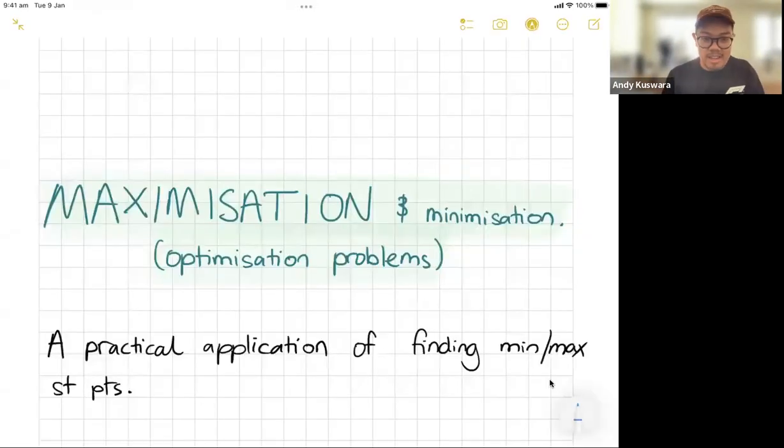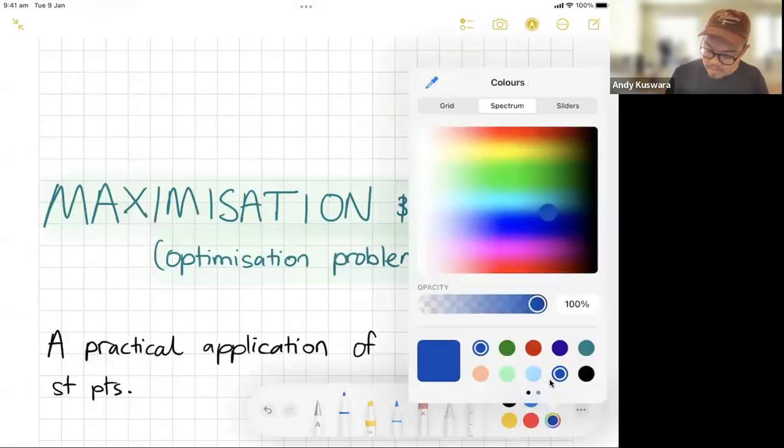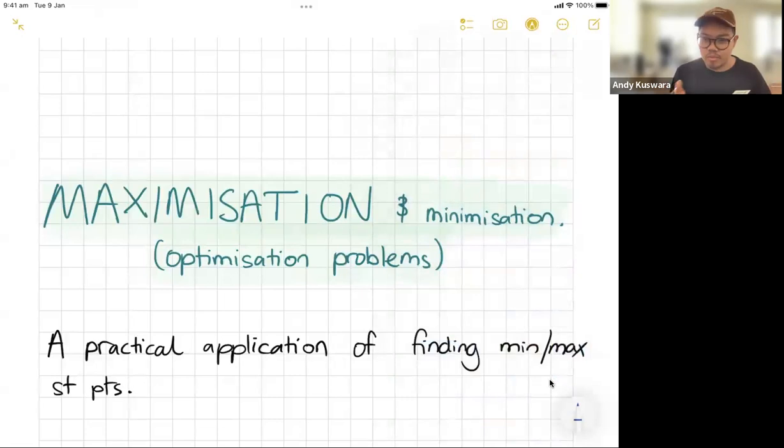So let's take a look at today's topic. It's going to be a big concept. I've tried my best to break it down as best as I can but you're going to need a lot of practice with this. HSC wise this is going to be your band six type questions in advance, so good practice but I'm going to break it down into its simple form today. We call this maximization and minimization, sometimes people call it optimization problems, and essentially it's a practical application for finding min or max stationary points.